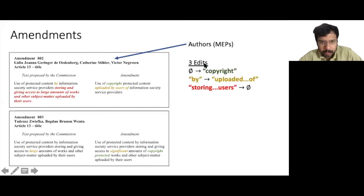Amendment 802 contains three edits: inserting the word copyright, replacing the word by with the phrase uploaded by users of, and deleting the phrase storing, etc. to users. Amendment 803 contains two edits: replacing the word large by significant, and inserting the phrase copyright protected.